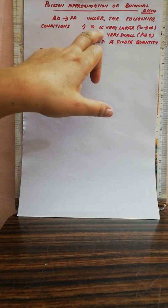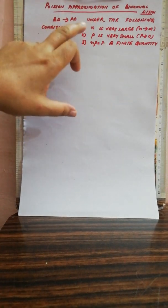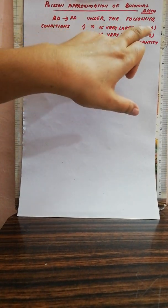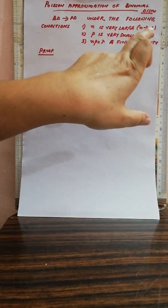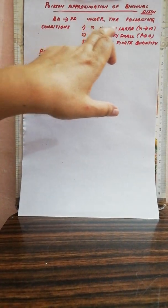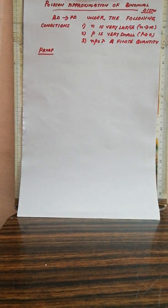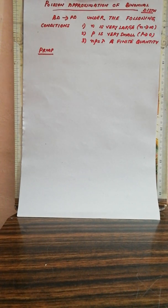When n is very large, that is n tending to infinity — that is the limiting case, limit n tending to infinity. And p is very small, that is p tending to 0, limit p tending to 0. And np is equal to lambda, a finite quantity. This gives us the Poisson Distribution.